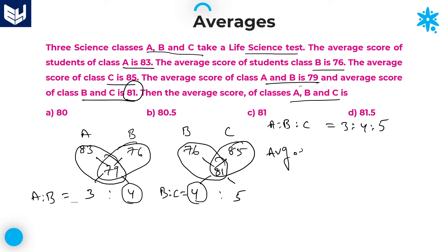Here the average of A, B and C, which is equal to sum of ABC. Here the strength in A is 3 parts into average 83, plus 4 into B, the strength is 4 and the average is given as 76, plus in C, 5 parts into average 85, divided by 3 plus 4 plus 5.